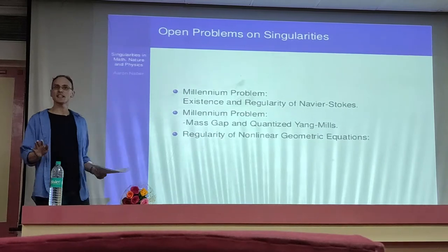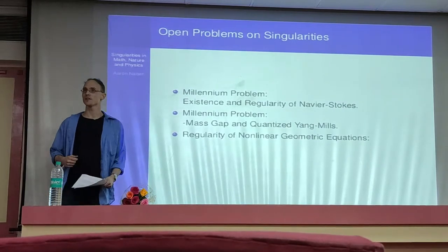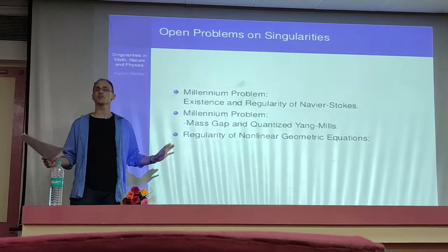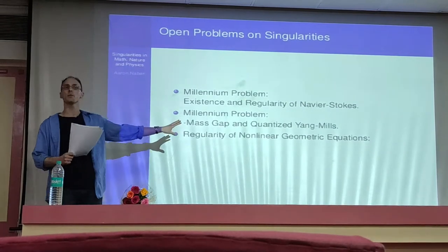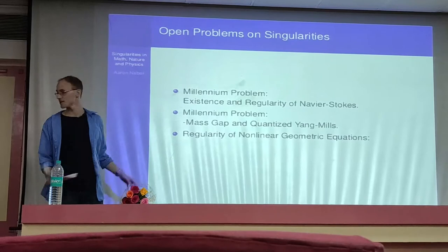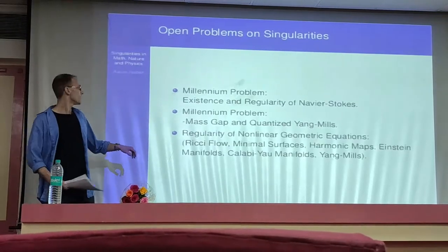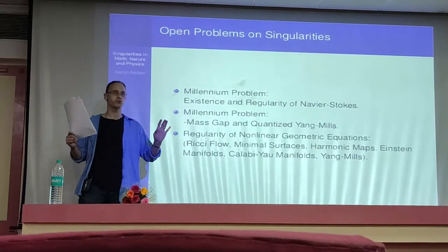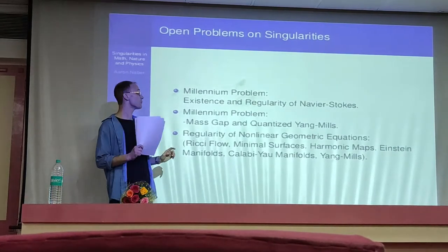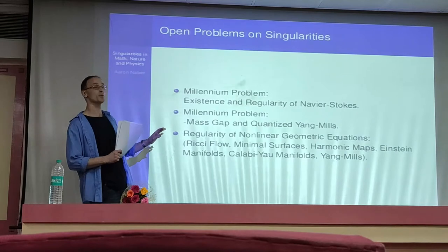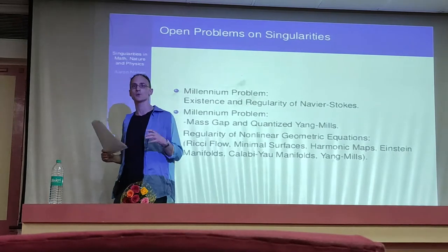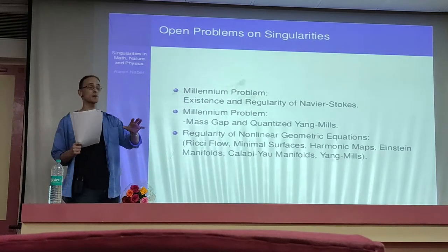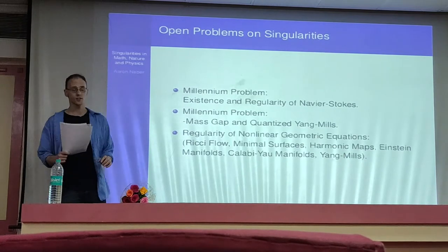I see no chance of us getting there, but let me mention it in two words. The last thing I might talk about is I list for you a whole bunch of nonlinear geometric equations: Ricci flow, minimal surfaces, harmonic maps, Einstein manifolds, Calabi-Yau manifolds, Yang-Mills. If we have time, we'll pick one of them, probably minimal surfaces, because this is the easiest to connect to. These are examples of some equations where we can understand what singularities look like.